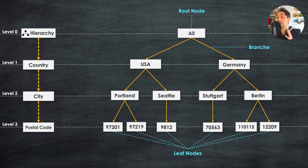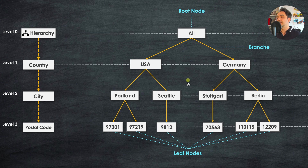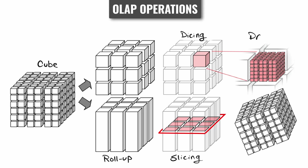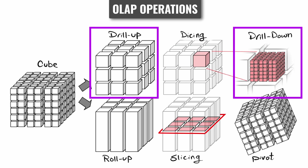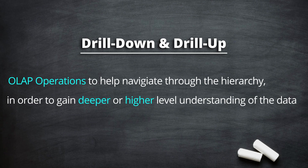With that, we have a complete hierarchy structure that looks like a tree. The root node represents the highest level of aggregation, intermediate levels are connected using branches, and the leaf nodes represent the lowest level of details. We can perform roll-up operations on the cube, and with hierarchy in our data we can do two very important operations: drill down and drill up. These operations help us navigate through the hierarchy to gain deeper or higher-level understanding of the data.